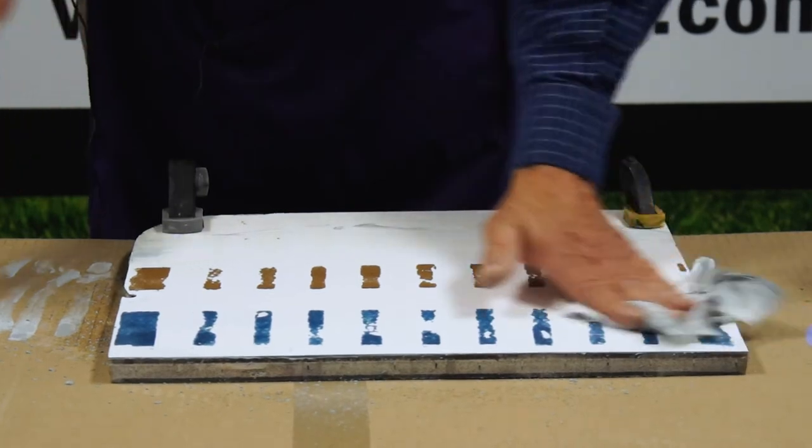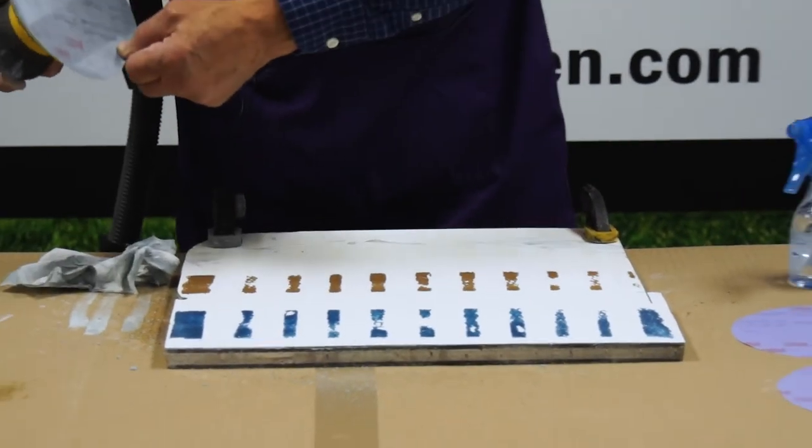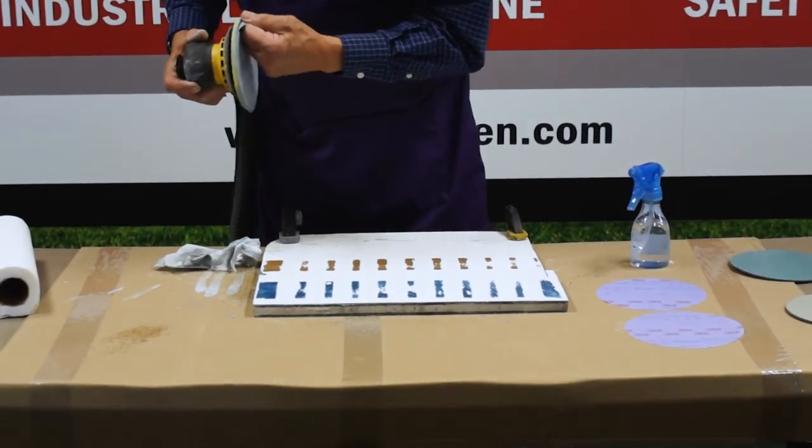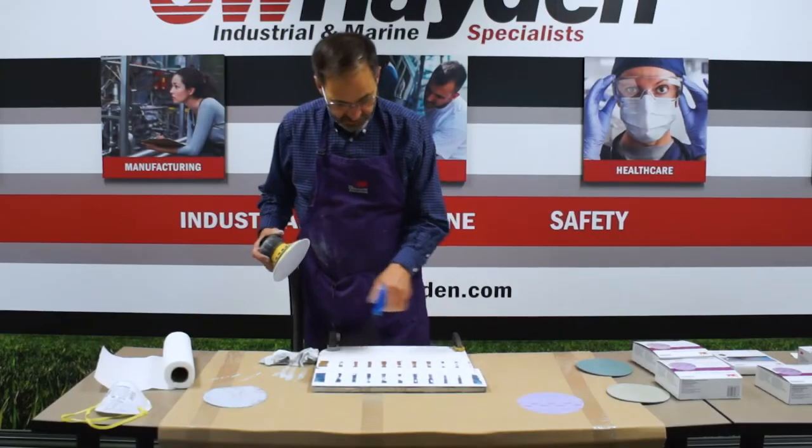So I'm going to go ahead and shift over to the next grit which is the P1500. Re-wet the surface after wiping it off.